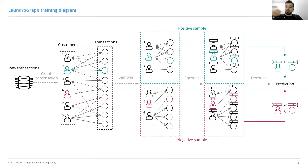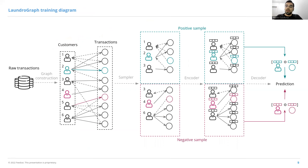LaundroGraph can be seen pictorially here. We take a dataset of raw transactions and create a bipartite customer transaction graph. A sampling function extracts the computational subgraph for the entities we want to calculate representations for. The collection of these subgraphs is passed through an encoder that generates representations for every node type. Finally, these representations are leveraged by the decoder, which outputs the likelihood of an edge existing between customers and transaction pairs. Since this is a fully self-supervised system, we also need positive and negative labels.